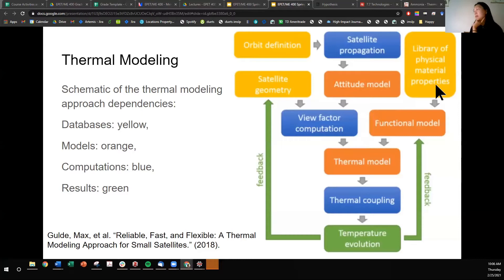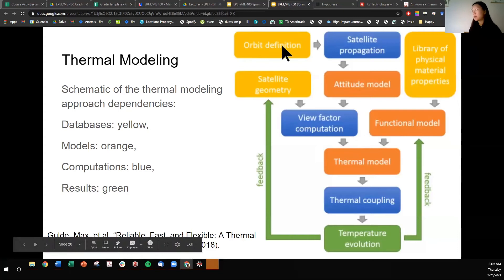And then we have, what is a functional model? It takes library of physical material properties. So a functional model could be the way that you embody the material properties into the thermal model. Your thermal model is going to be actually calculating the amount of heat that is going through the different nodes. And then your computations are going to be tying together these library of databases, the models, and the results.